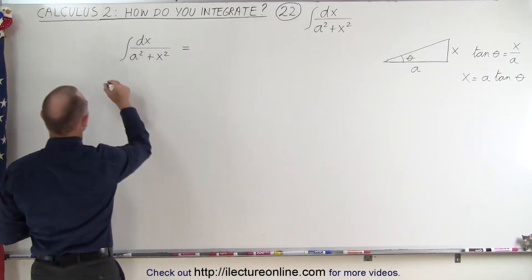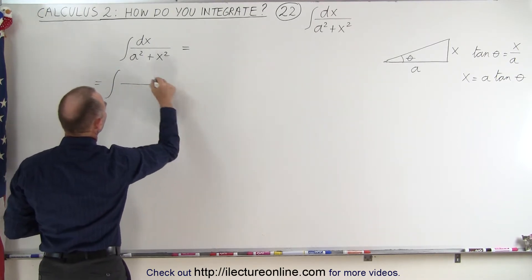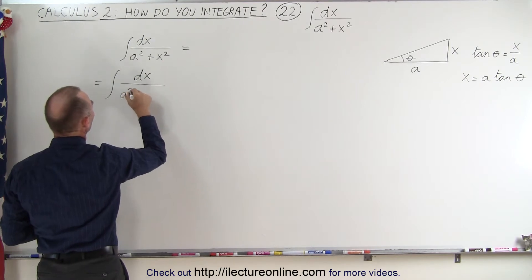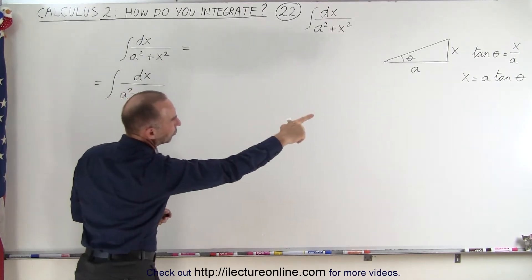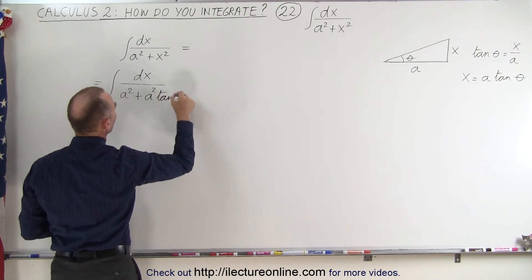So then we get the following. This becomes equal to the integral of dx in the numerator divided by a² plus x². And so x² is now going to be a² times tan²θ.